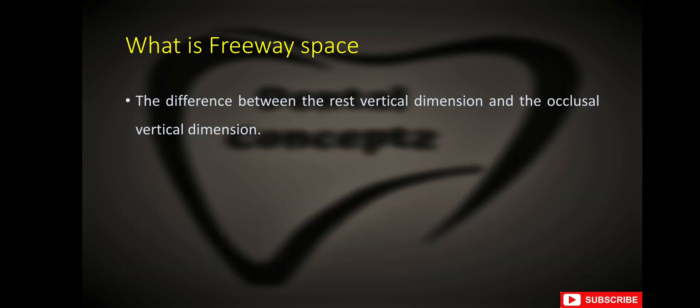What is freeway space? Freeway space is the difference between the rest vertical dimension and the occlusal vertical dimension. The normal value is 2 to 4 mm.